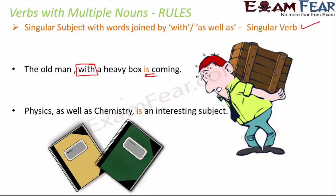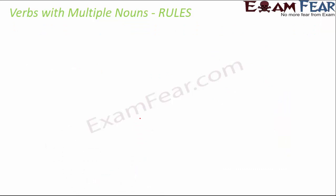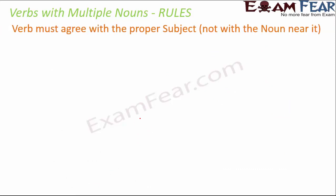Let's take another example: 'Physics as well as chemistry is an interesting subject.' Even though we are talking about two different subjects — physics and chemistry — we've used 'as well as' to connect them. If I had written 'Physics and chemistry are interesting subjects', that would use a plural verb, because two singular nouns are connected by 'and'. But the moment we use 'as well as', they act as a single entity, so we use a singular verb.